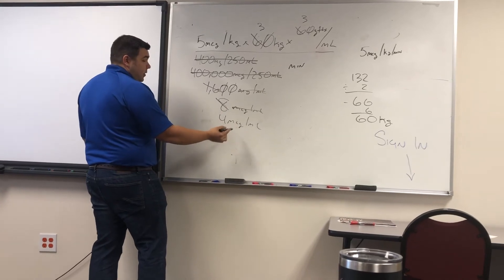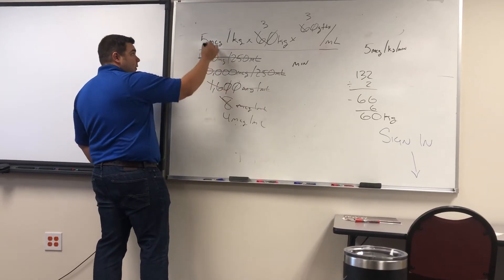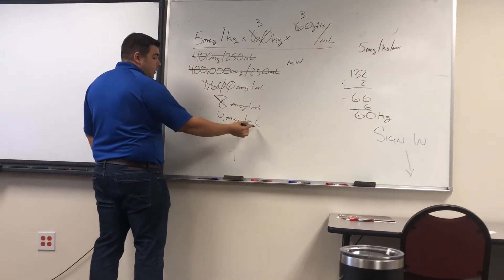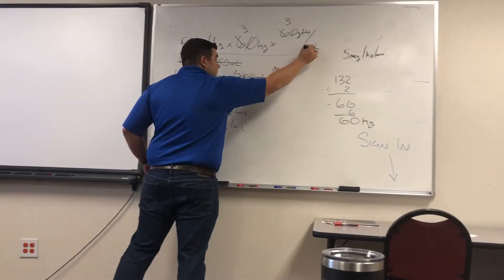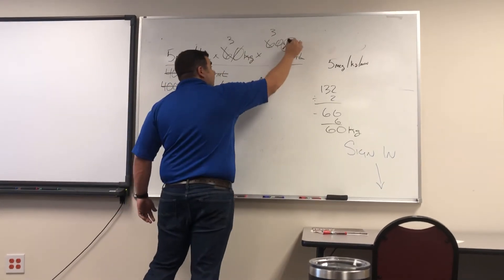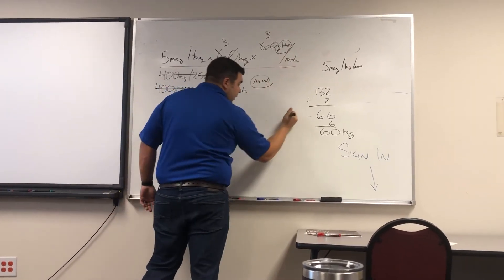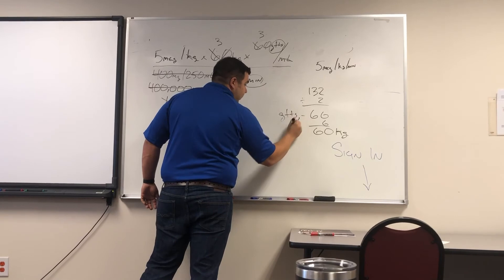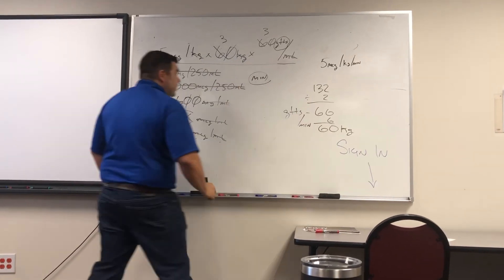So any duplicates you can get rid of? So I have microgram down here. Microgram. Good. ML. ML. Kilograms up top. And then kilograms up top. So all the duplicates I get rid of, and I'm left with drops per minute. And we know that that's what we want. Drops per minute.